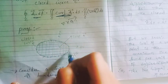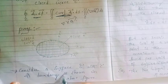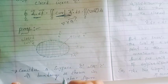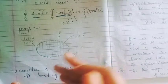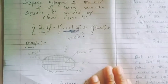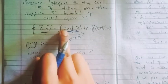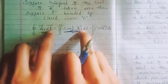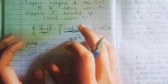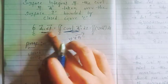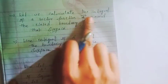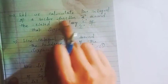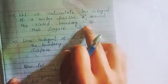Consider the surface S with C as its boundary. As shown in the figure above, we have to consider the surface S with boundary C. Now we have to set up the main relationship: the line integral is equal to curl of A · ds. Let us calculate the line integral of vector function A around the closed curve C of the surface S.